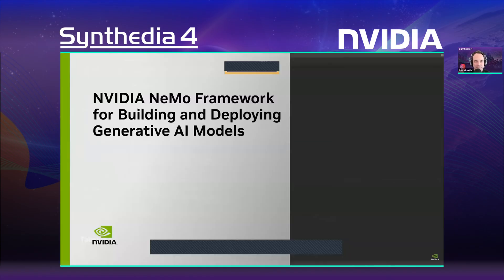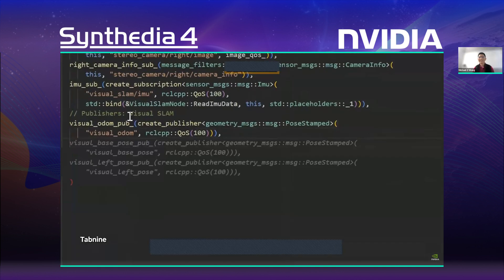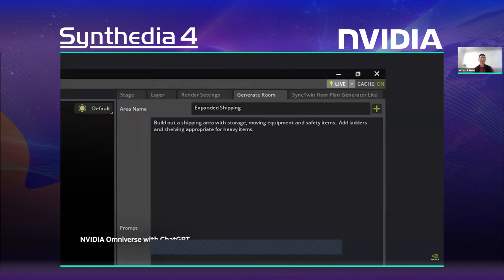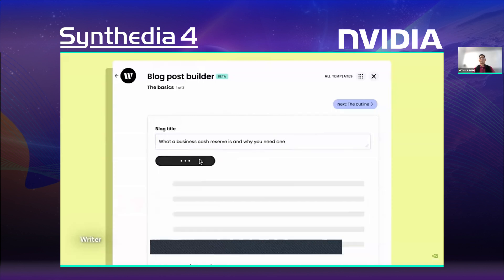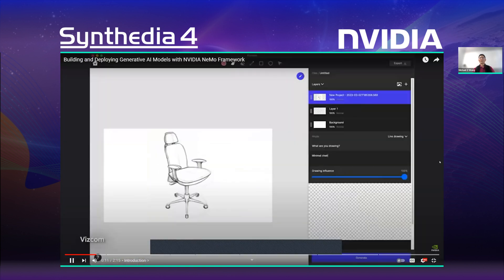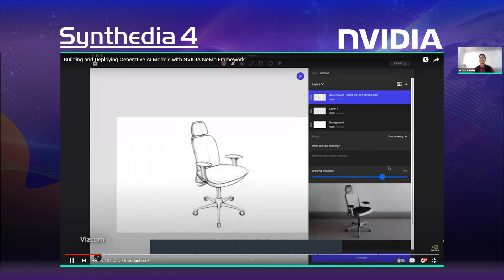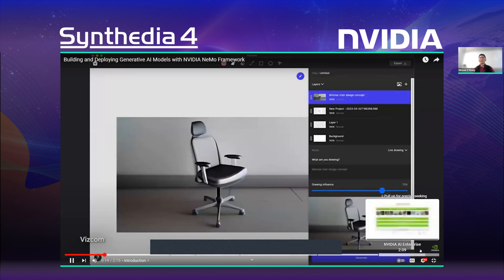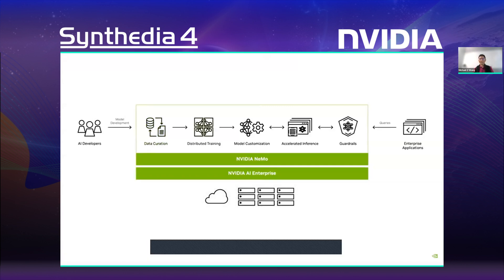Enterprises are turning to generative AI to revolutionize the way they innovate, optimize operations, and build a competitive advantage. To achieve this, they need a foundry to build generative AI models. NVIDIA NEMO framework is an end-to-end, cloud-native framework for curating data, training and customizing foundation models, and running the models at scale, while ensuring appropriate responses with guardrails.